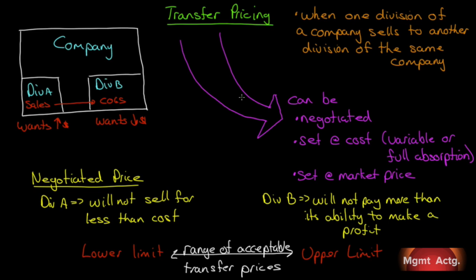A transfer price occurs when one division of a company sells to another division of the same company. I have drawn a little diagram over here. Here's the company in the big white box, with Division A and Division B. Division A will sell to Division B — Division A records the transaction as a sale, and Division B records it as a cost of goods sold.